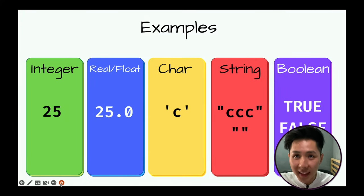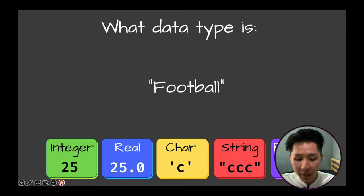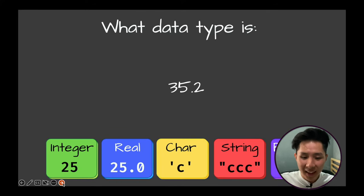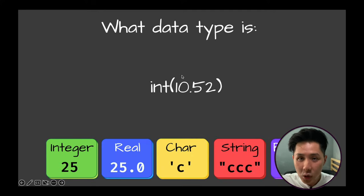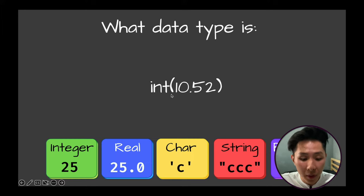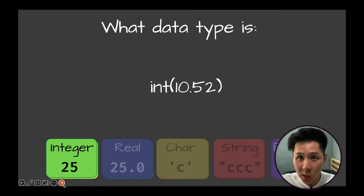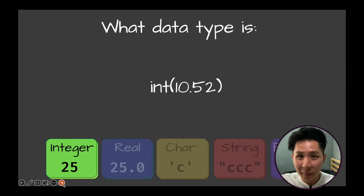Let's do a quick test to make sure you understand the different data types. If a value has many characters and is enclosed by double quotes, we know it is a string. If a value is 35.2, we know it is a real data type. An integer would be a whole number. These are the data types you'll be using while learning Python.